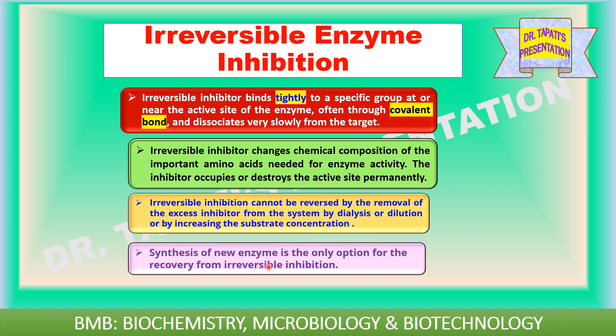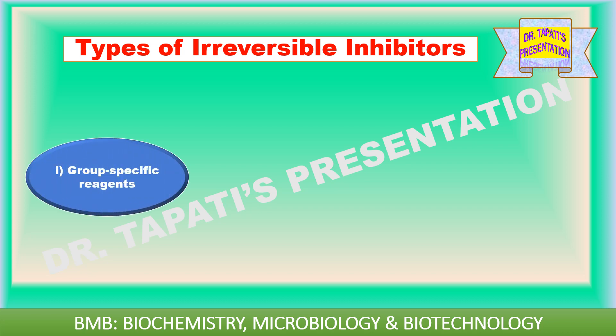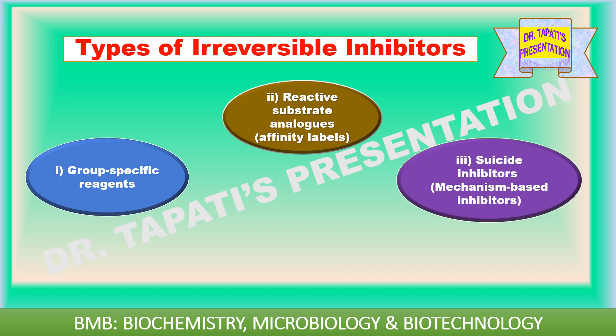Synthesis of new enzyme is the only option for recovery from irreversible inhibition. There are mainly three types of irreversible inhibitors: group specific reagents, reactive substrate analogs or affinity labels, and suicide inhibitors or mechanism-based inhibitors.